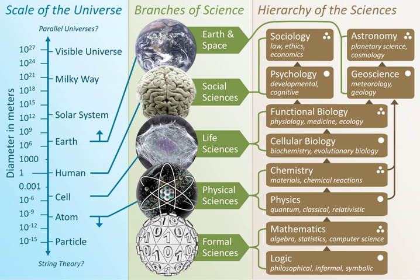Natural sciences — the study of natural phenomena including cosmological, geological, physical, chemical, and biological factors of the universe. Social sciences — the study of human behavior and societies. Natural and social sciences are empirical sciences, meaning that the knowledge must be based on observable phenomena and must be capable of being verified by other researchers working under the same conditions.